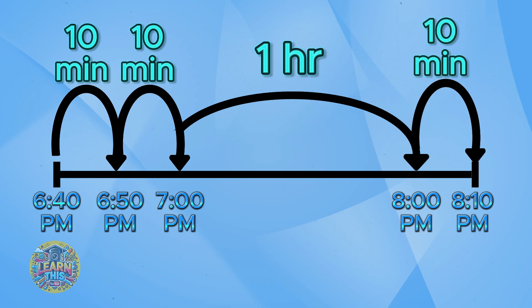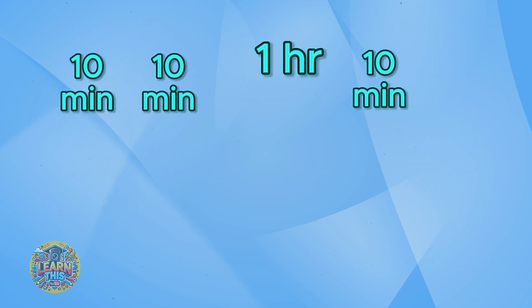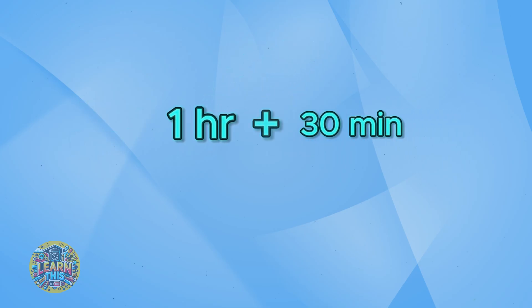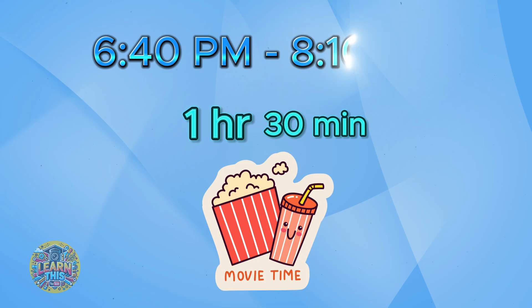Now all we have to do is add up our times. Let's count our minutes first: 10 plus 10 plus 10. If we add those up, it gives us 30 minutes. We only have one hour, so let's add that to the minutes. And we get our answer — the movie is one hour and 30 minutes long.